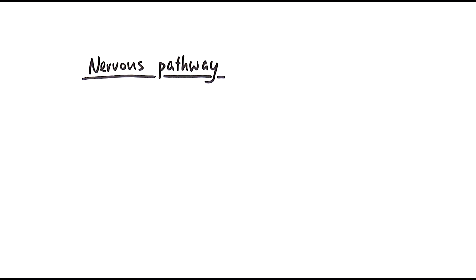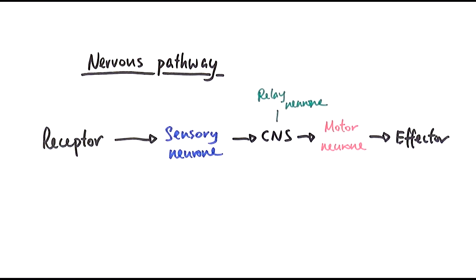We'll start with the basics of the nervous pathway. We have the receptor, which receives a stimulus or stimuli, and then the receptor sends an electrical impulse through the sensory neuron to the central nervous system — the brain and spinal cord. Within the CNS, the relay neuron relays the signal to the motor neuron, which carries the impulse to the effectors. There are two types of effectors: muscles, which produce a nervous response, and glands, which produce a hormonal response.